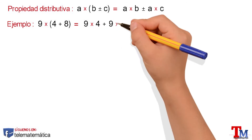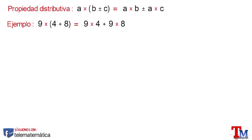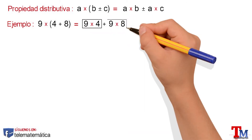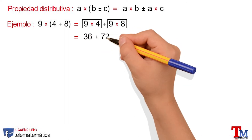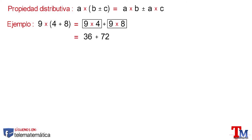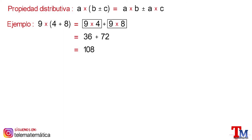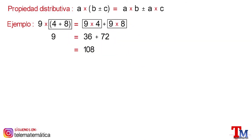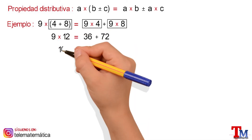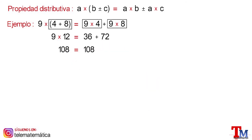Let's see an example: 9 multiplied by the quantity 4 plus 8. Solving both products, we would have 36 plus 72, and solving the addition we would have as a result 108. To verify the property, in the left member we solve the operation inside the parentheses and get 9 multiplied by 12, and solving the product this is equal to 108. Since we have an equality, the property is fulfilled.